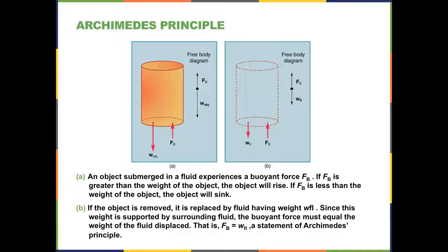Once the object is removed, the fluid will replace it. And that fluid will have the same weight as the amount of fluid that was displaced. This is the supporting fluid that has caused the buoyant force. So the buoyant force must equal the weight of the fluid that's displaced. Therefore, F sub B is equal to the weight of the fluid that's displaced or the volume of fluid that's displaced by the object. And this is another way or a means of stating Archimedes principle.